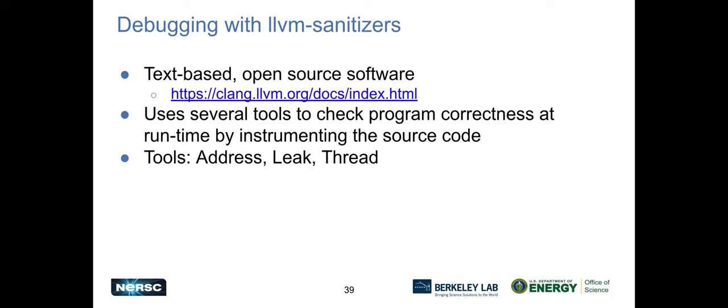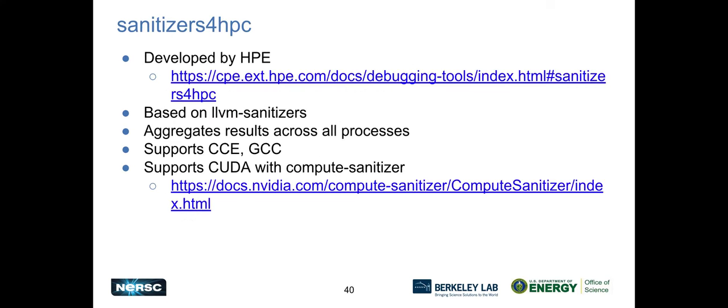Now, the LLVM sanitizers actually do require you to do a different compile because they do runtime checking based on instrumenting your source code. And these are all based on things that are available in LLVM based compilers, though I do believe that it does support GCC as well. And some of the most common of those are checking for addresses, checking for thread leaks, checking for memory and checking for thread problems. Again, the sanitize for HPC developed by HPE based on a similar thing. And this aggregates results again across all the processes so that each process doesn't have to output the information, and you don't have to aggregate it yourself. And now this supports CCE and GCC. It would probably support most of the other LLVM based compilers as well. And it supports CUDA with something called the compute sanitizer, which is a little out of scope at the moment. So I'll just put a link here and let you guys take a look at that later. The compute sanitizer is a part of the CUDA toolkit. So it already exists on Perlmutter if you want to use it.